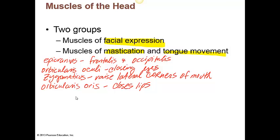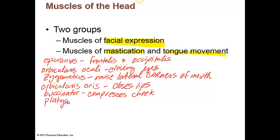The buccinator muscle is for compressing the cheek — it can be used for whistling or sucking. Then we also have the platysma, which is a large superficial muscle. What it does is tense the skin of the neck, help to depress the mandible, pull the lower lip down, and produce a downward sag of the mouth.